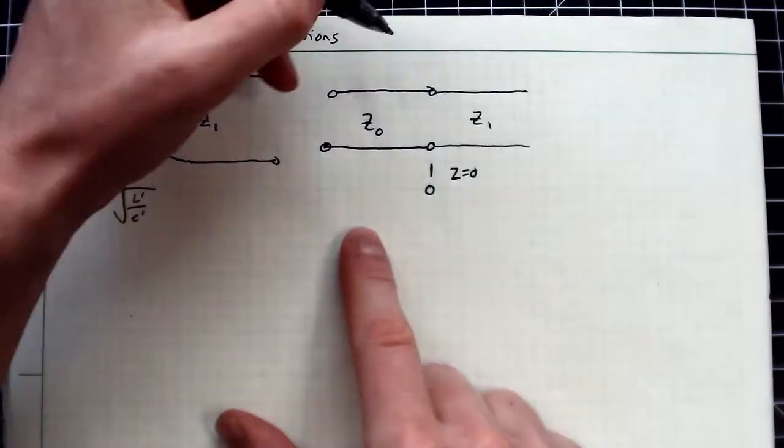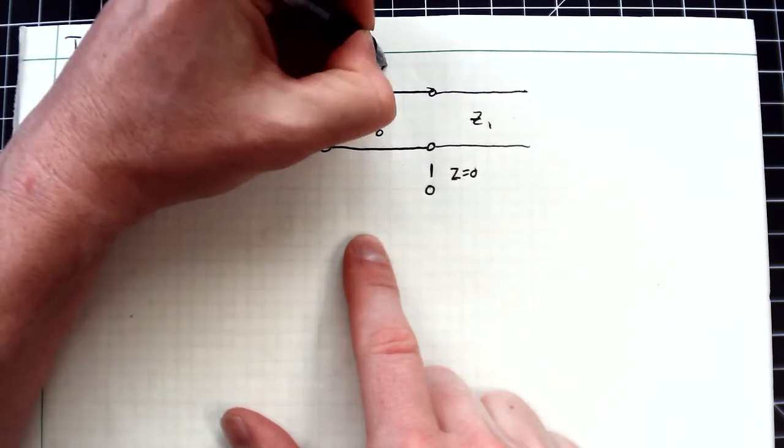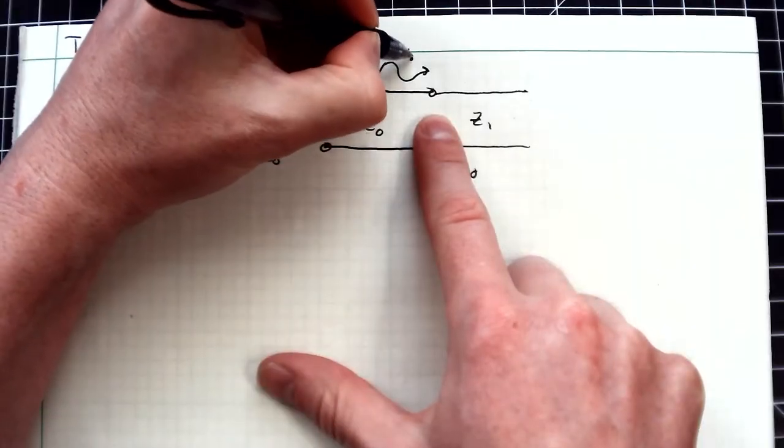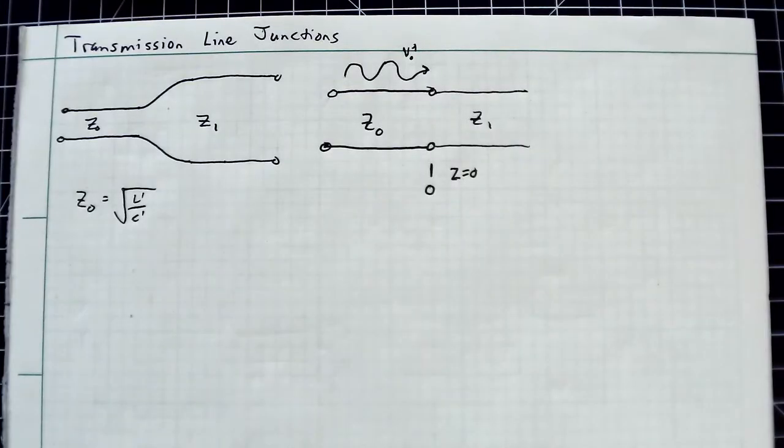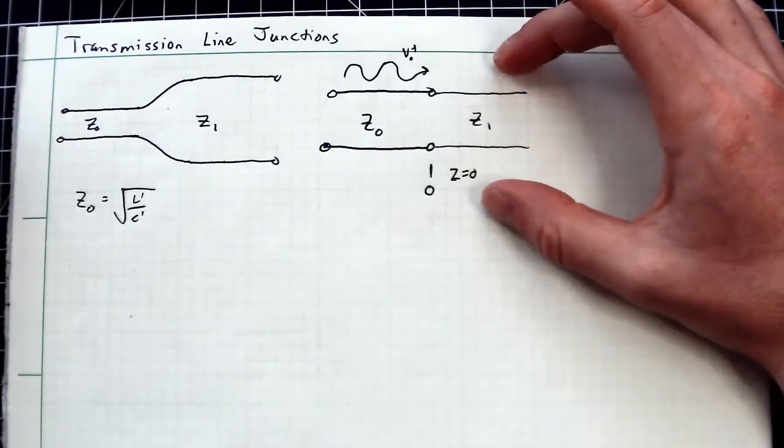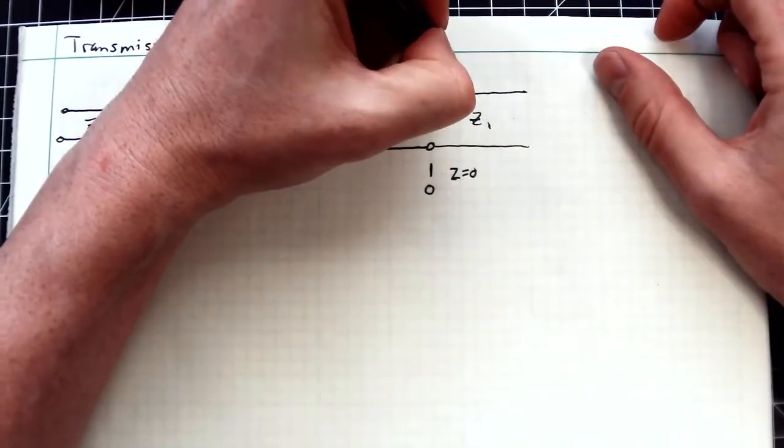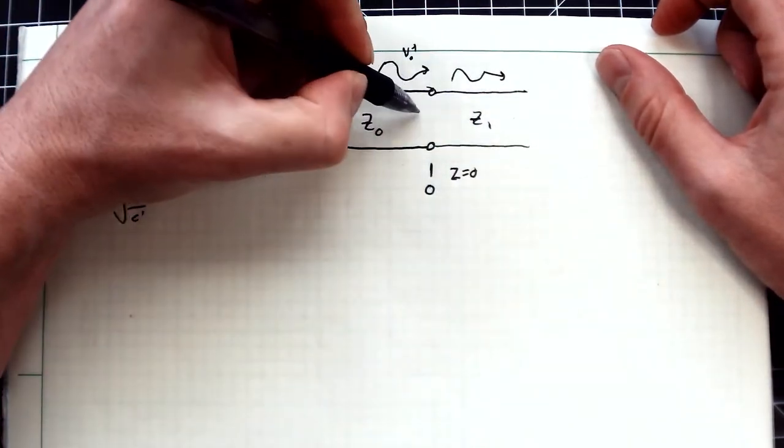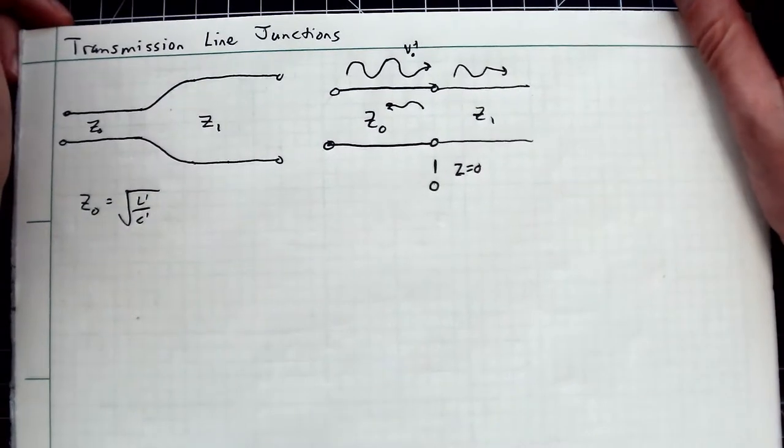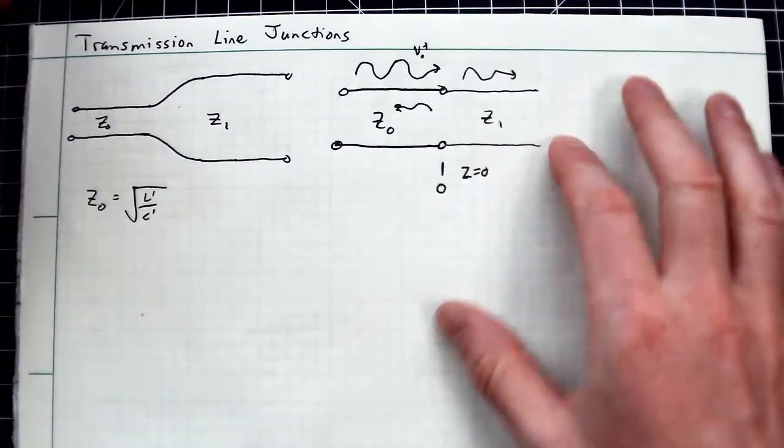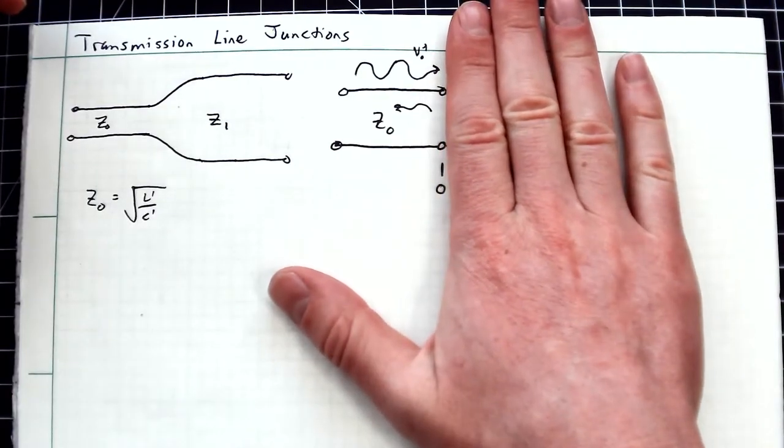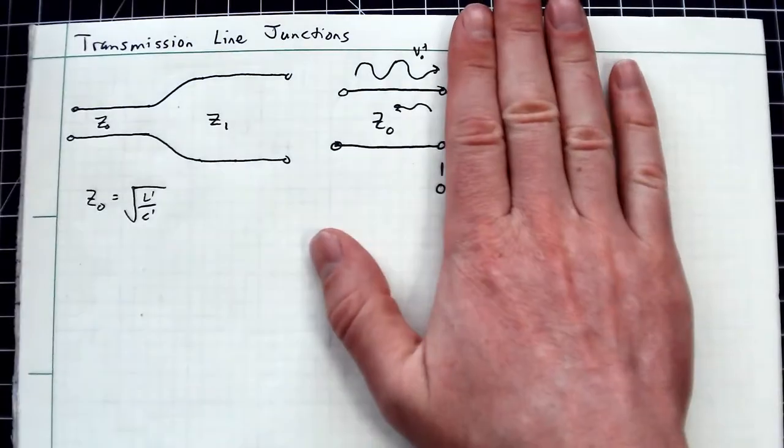I'm interested in understanding what happens if I excite this transmission line with some incident signal like V₀⁺. What will happen physically? You'll get a transmitted signal over here and a reflected signal back. The proof is a little long, and you've probably seen this before, but if you imagine this line going on forever, then from the perspective of the incident line, this will simply behave as some lumped load.